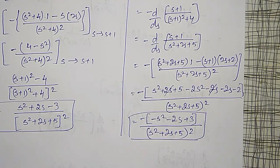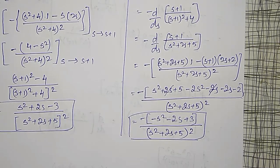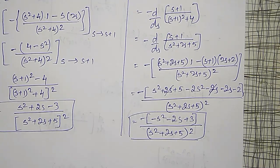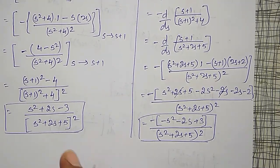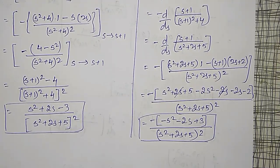Applying the properties, which one is first and which one is second — that is very important here. You can select any one of them first, but whichever is simpler: I feel the first method is the simplest one. Now I am going for the next example.